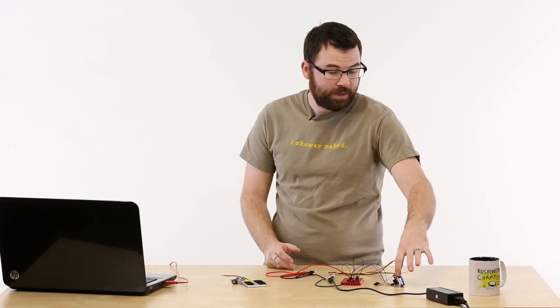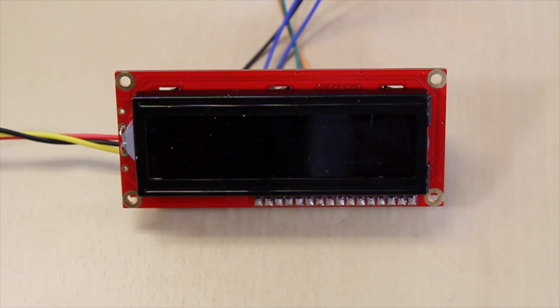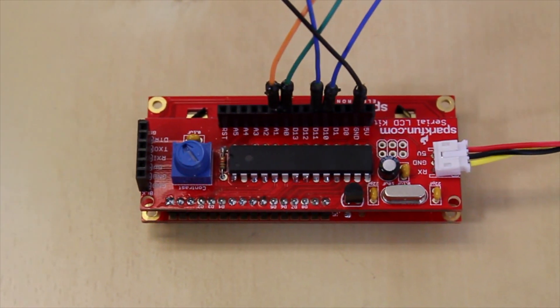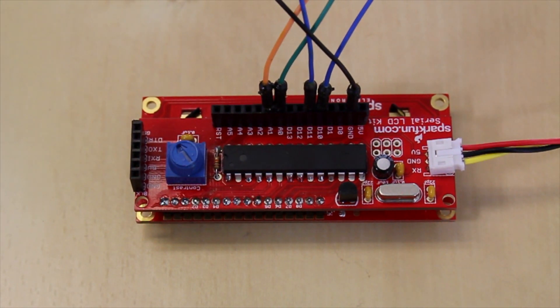Let's talk about the Serial LCD Kit. The Serial LCD Kit comes with this 16x2 character display and this board on the back, which contains an ATmega328 and some pins and some other components.